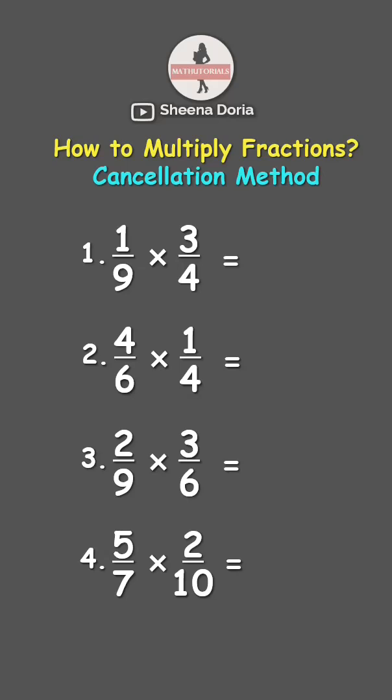Before you multiply, look for numbers in the numerators and the denominators that can be divided by the same number. Here, 9 and 3 can be cancelled out since they both divide evenly by 3. So 3 divided by 3 is 1, while 9 divided by 3 is 3.